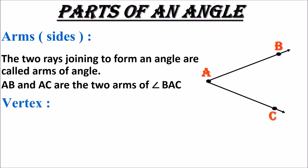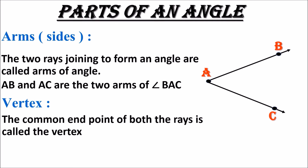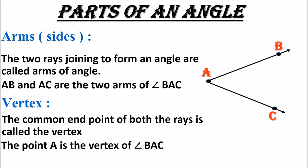Here we have the second part: vertex. Vertex of an angle — the common end point of both the rays is called the vertex. Here, point A is the end point of ray AB, and point A is also the end point of ray AC. This common end point, that is A, is known as the vertex of angle B, A, C.